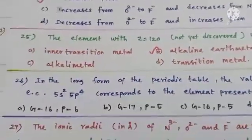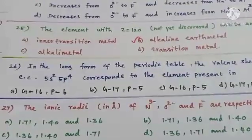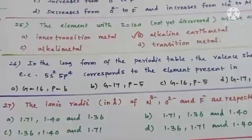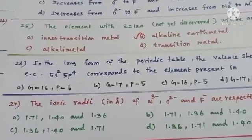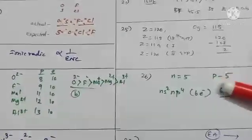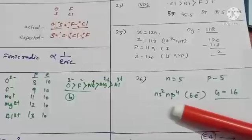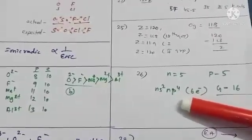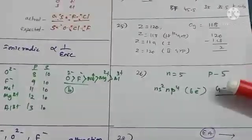Question 26: in the long form of the periodic table, the valence shell electronic configuration 5s² 5p⁴ corresponds to an element present in which period and group? The principal quantum number is 5, so this element belongs to period 5. The total valence electrons are 5s² 5p⁴ = 6 electrons, so the element belongs to group 16. It is present in period 5, group 16.